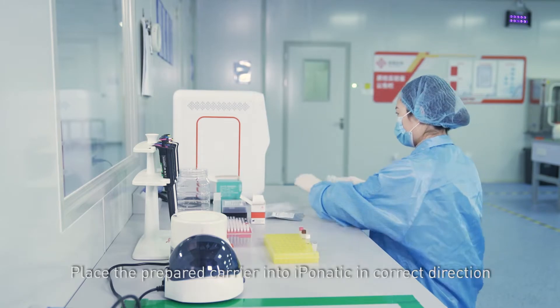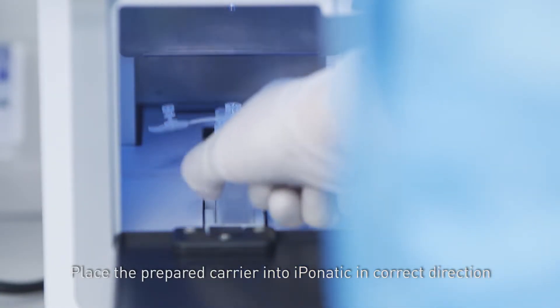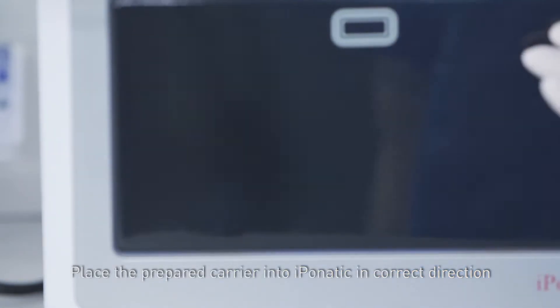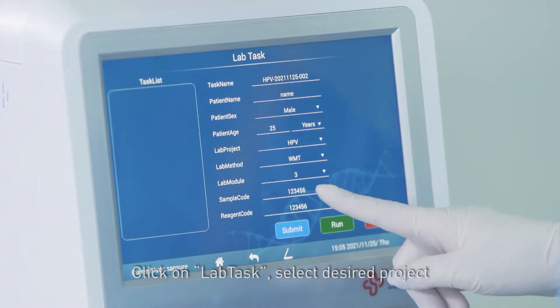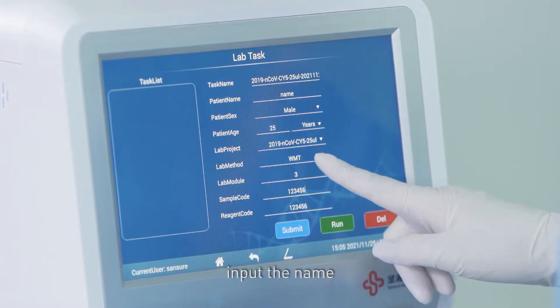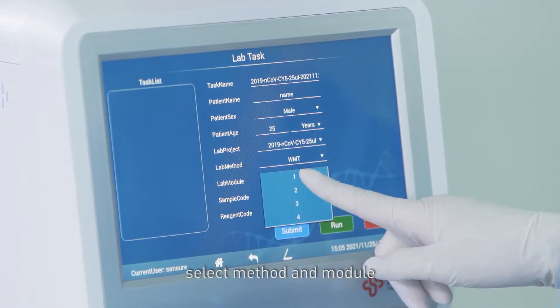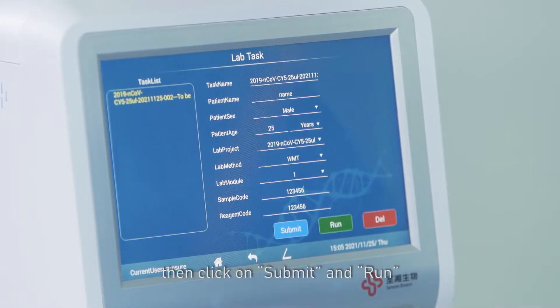Place the prepared carrier into Iponetic in the correct direction. Click on lab task, select desired project, input name, select method and module. Then click on submit and run.